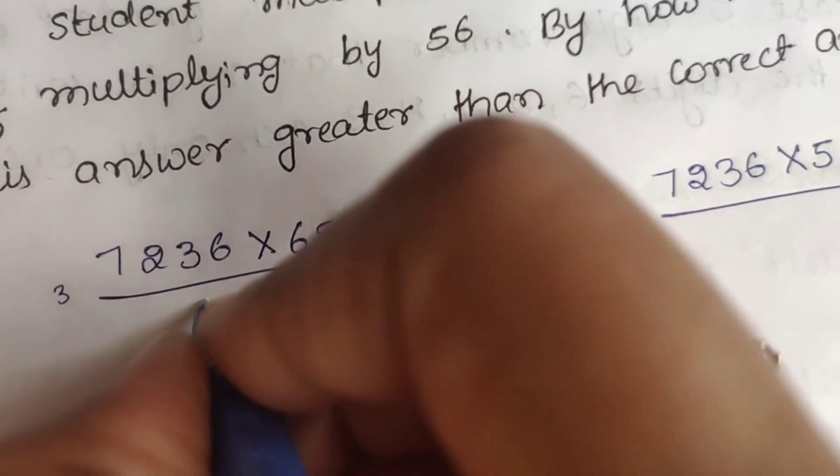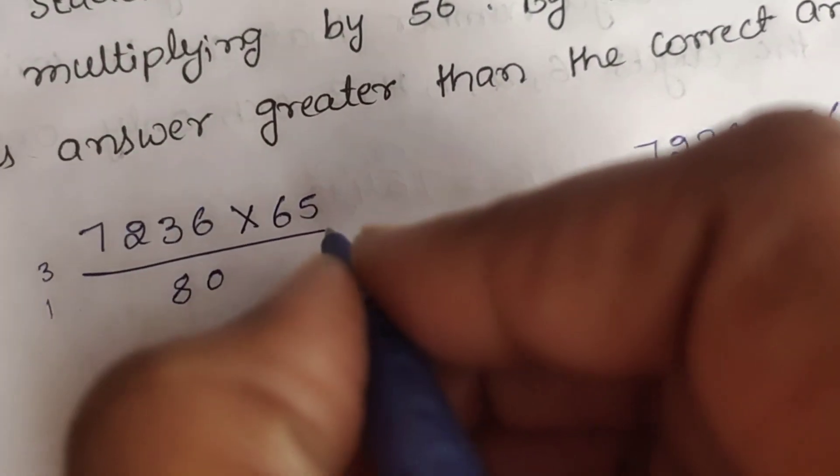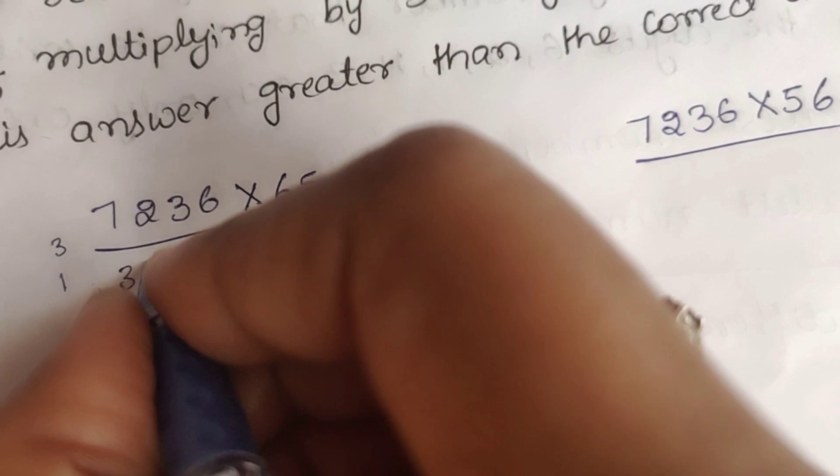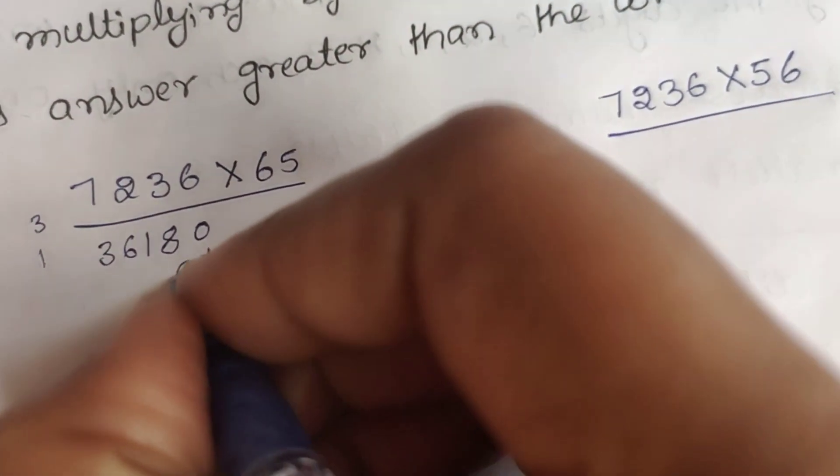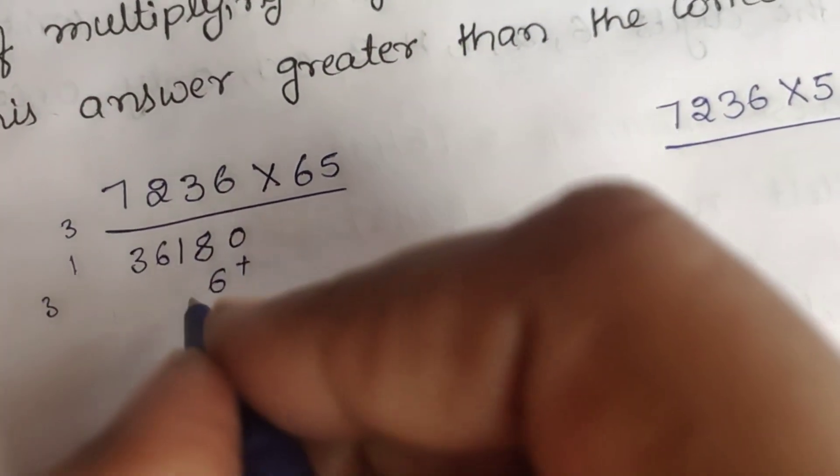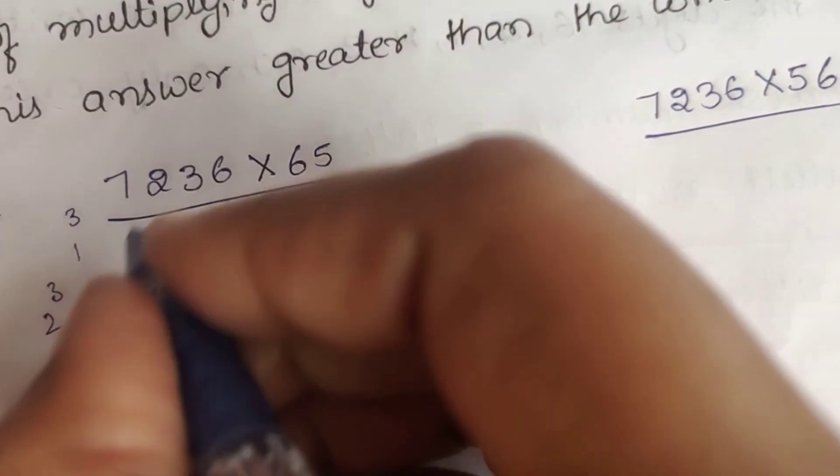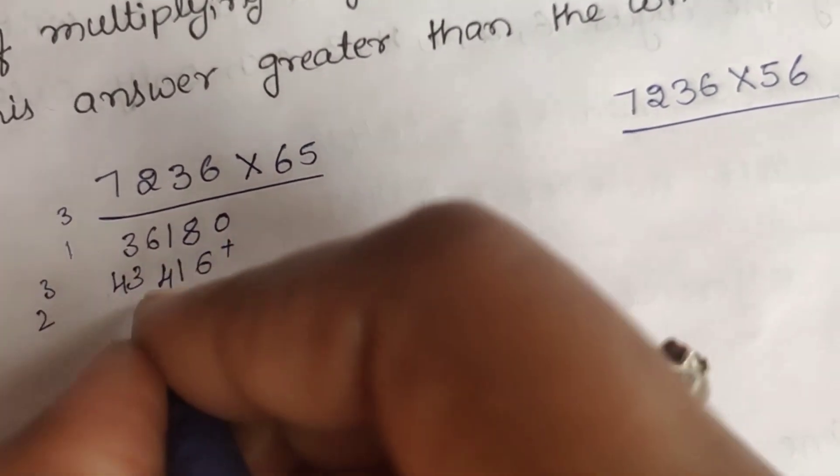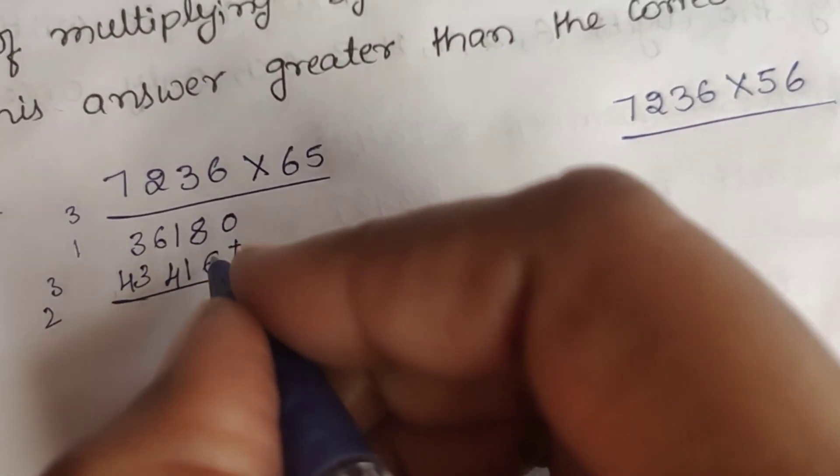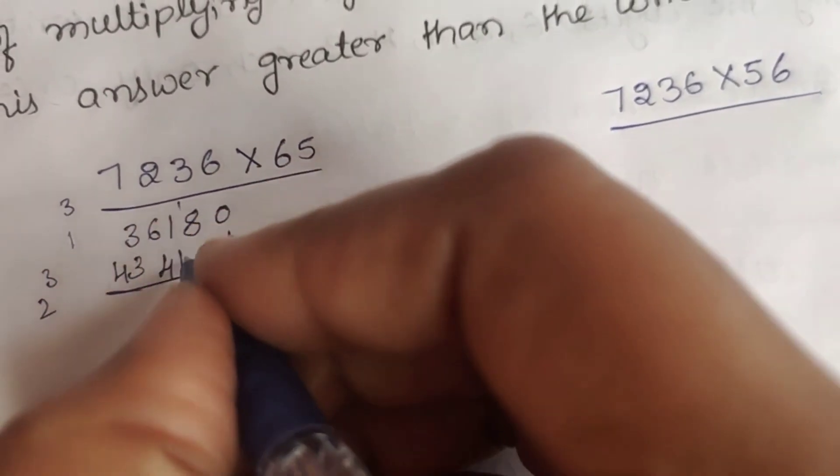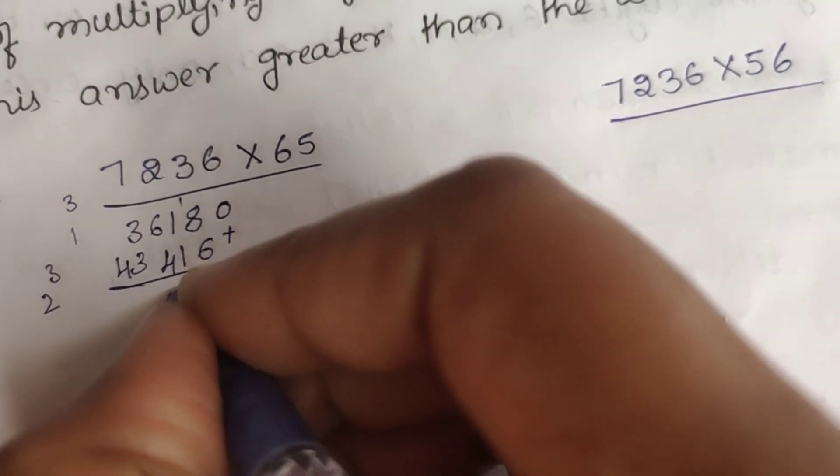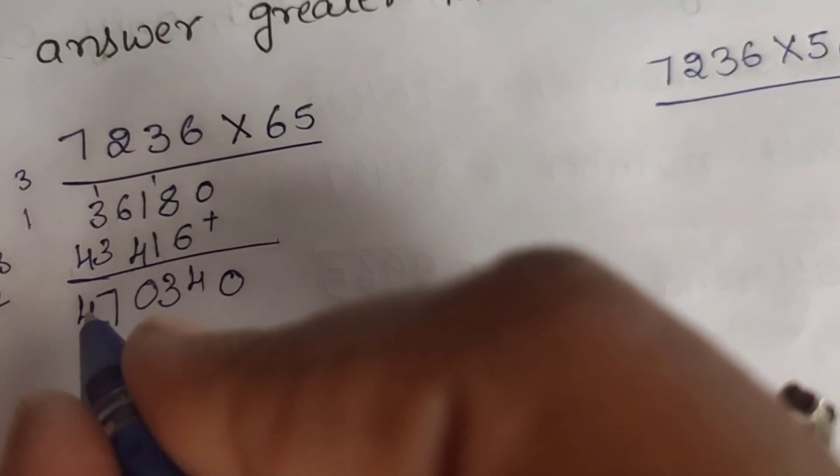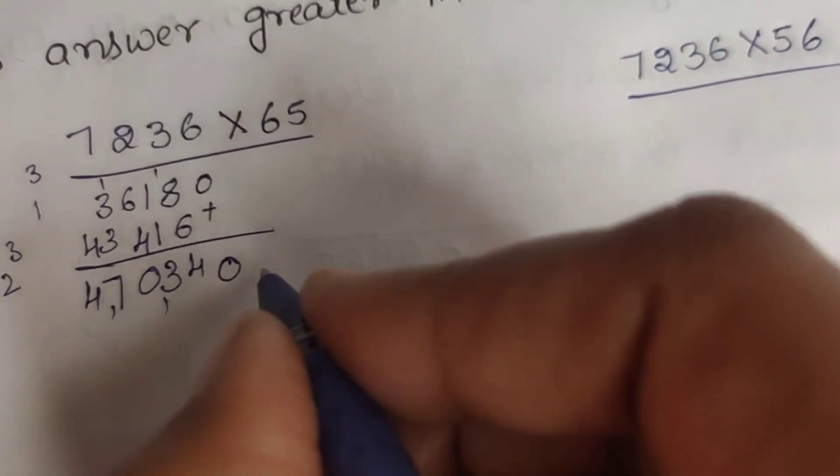So, 3 carry, 15. So, 15 plus 3 is 18, 1 carry. 5×2 are 10 plus 1 is 11, 1 carry. 7×5 are 35 plus 1 is 36. Next, 6×6 are 36, so 3 carry. Next, 6×3 are 18, 18 plus 3 is 21. Then, 2 carry. 6×2 are 12 plus 2 is 14, 1 carry. 7×6 are 42 plus 1 is 43. The answer is 4 lakh 70,340.